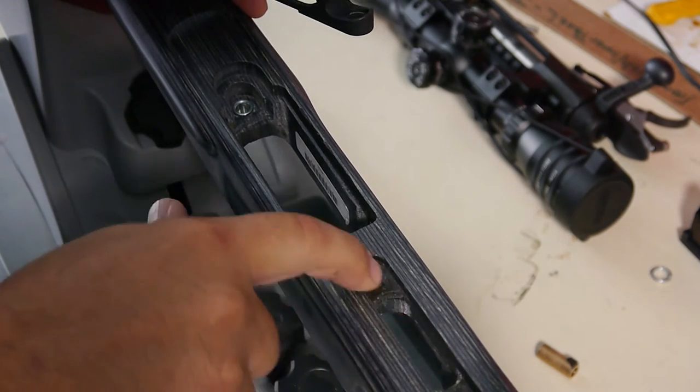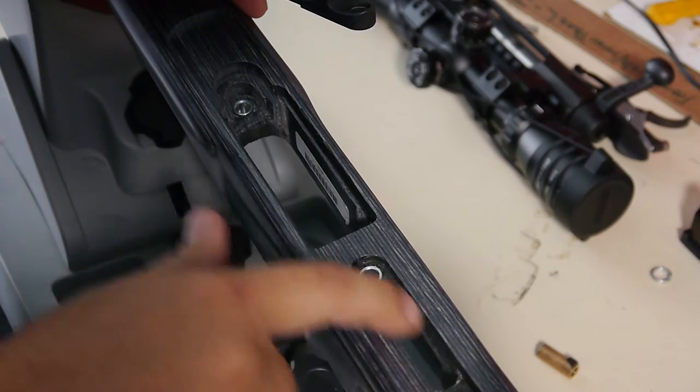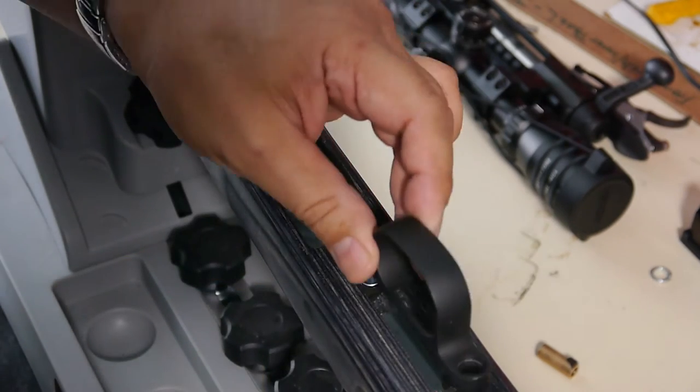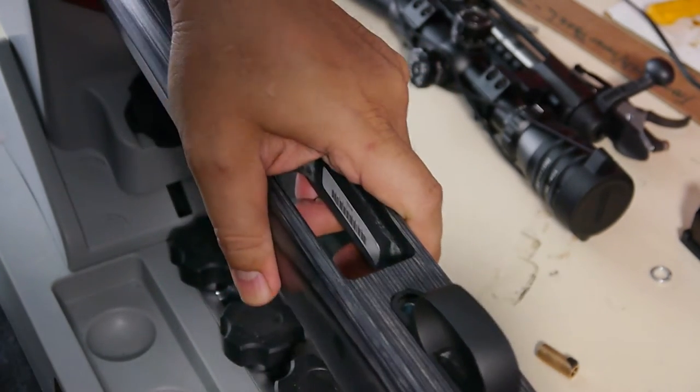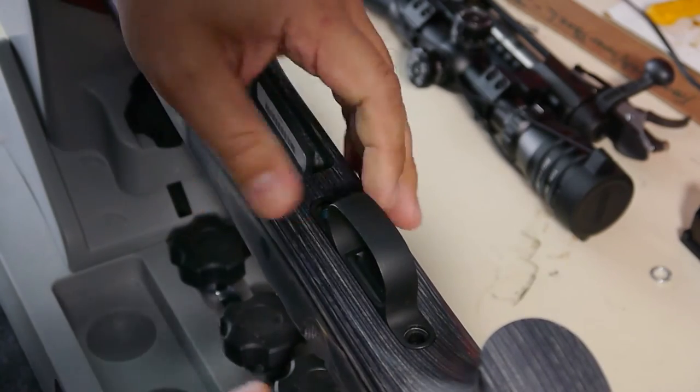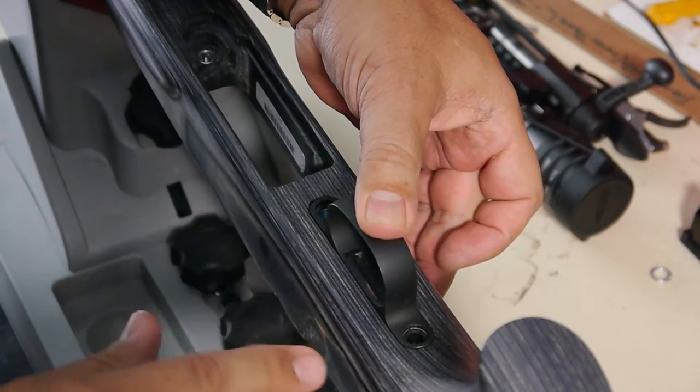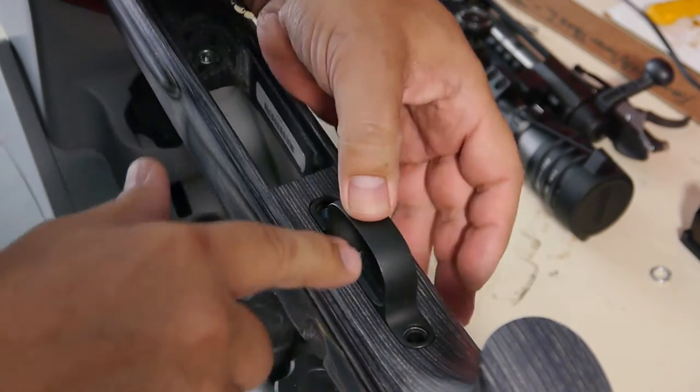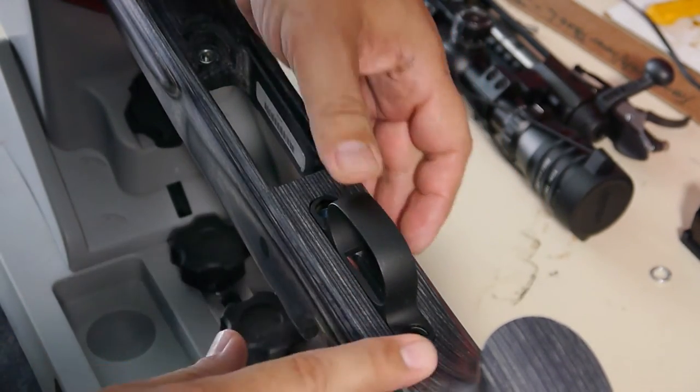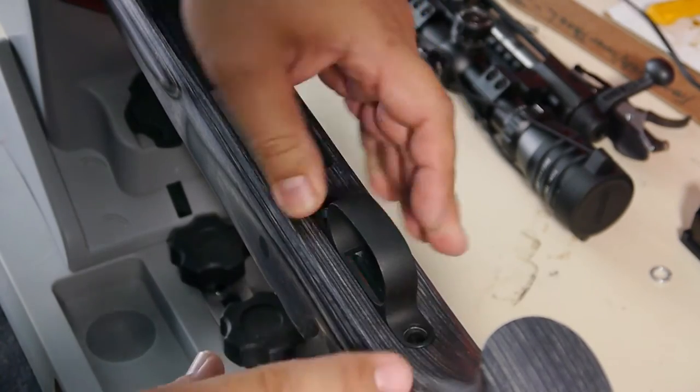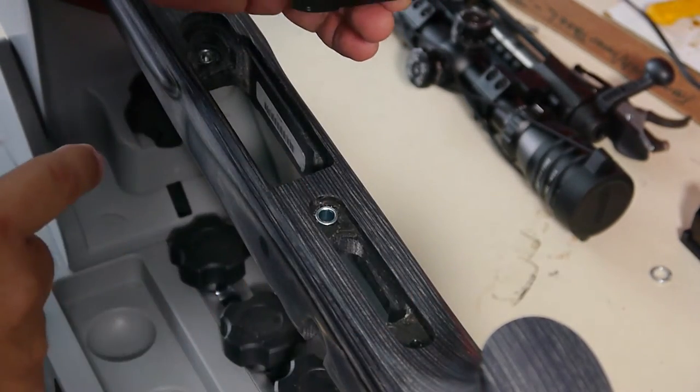I embedded the trigger guard mount here. And the reason why, you can see when I set that in, I wanted a flush fit. When you first get it, you can pop that in and it's kind of recessed down. I just wanted the flush fit, so I went ahead and embedded that area.